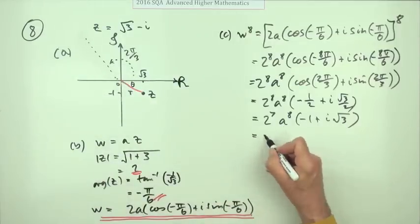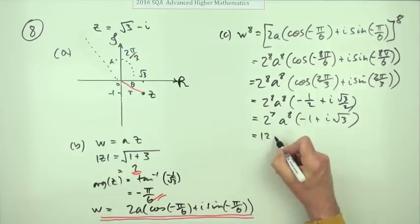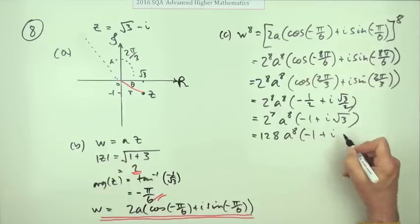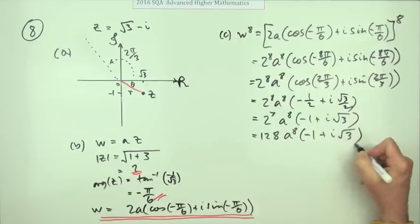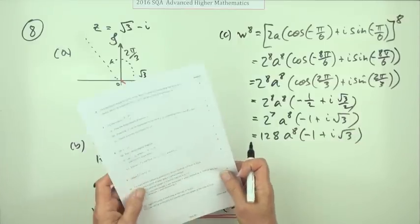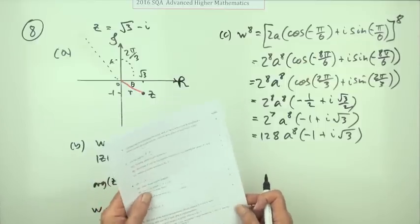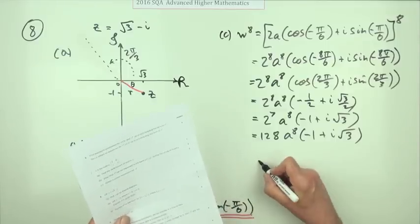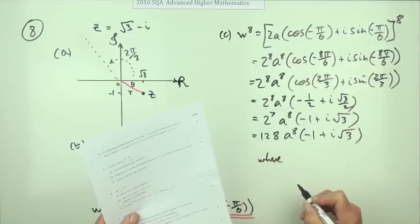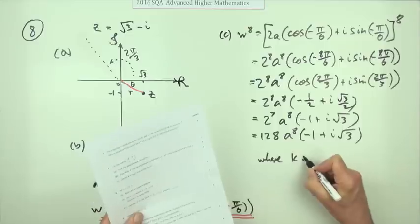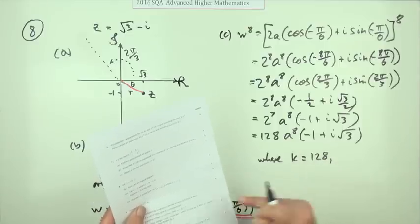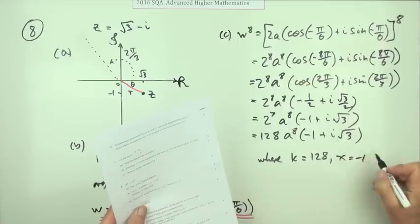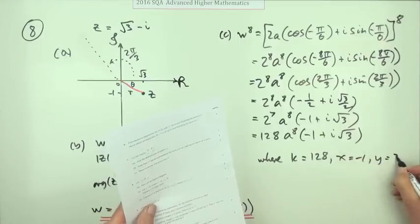Except maybe we'll have to spell that out. That'll be 128. 128, a to the 8, negative 1 plus i root 3. It doesn't actually say because it's also annoying when they mention these things. We'll have to specify what k, x and y are. We'll just put a wee safety net here where k would be this 128, x would be that negative 1, and y is the bit inside the square root which is a 3.